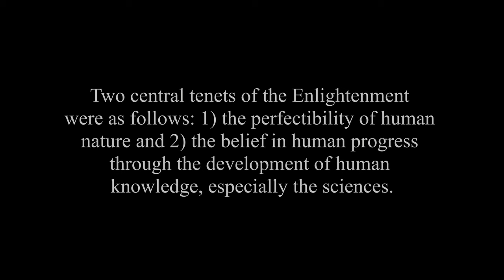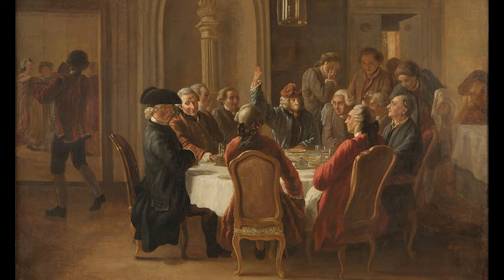Two central tenets of the Enlightenment were as follows. One, the perfectibility of human nature, and two, the belief in human progress through the development of human knowledge, especially the sciences. The Enlightenment is often considered by many historians, but not all, to be the beginning of the modern period in human history.